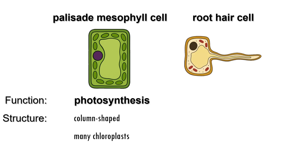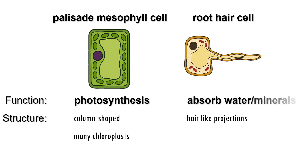Root hair cells are another type of specialized plant cell. Each cell has a hair-like projection that penetrates between soil particles, so they have a large surface area for absorption of water and mineral salts from the soil.